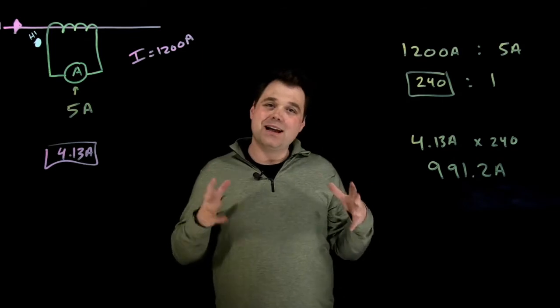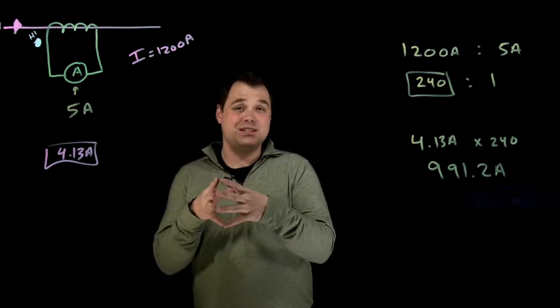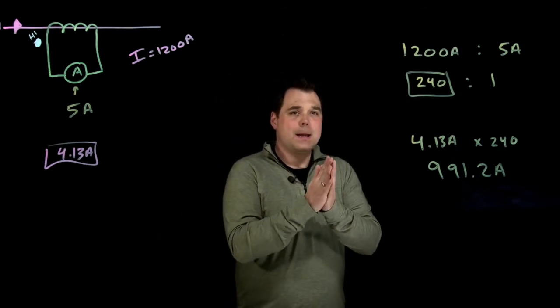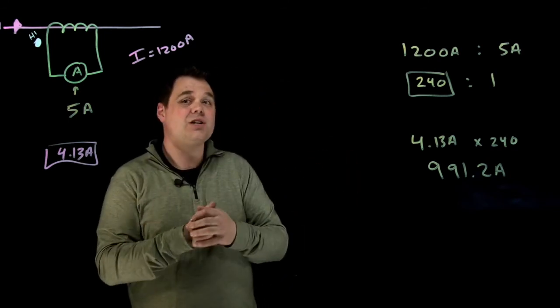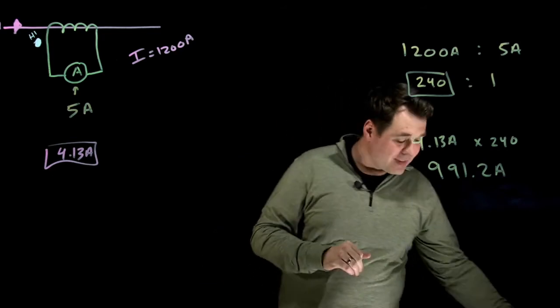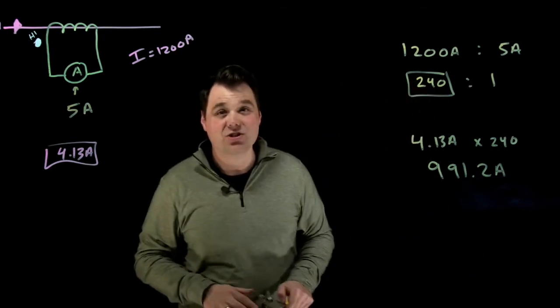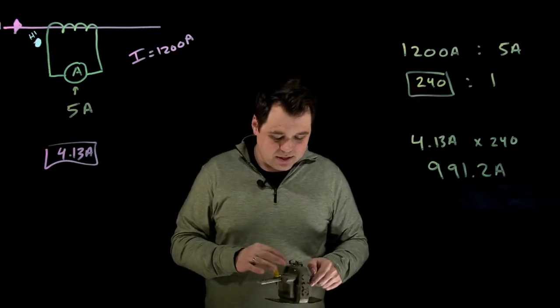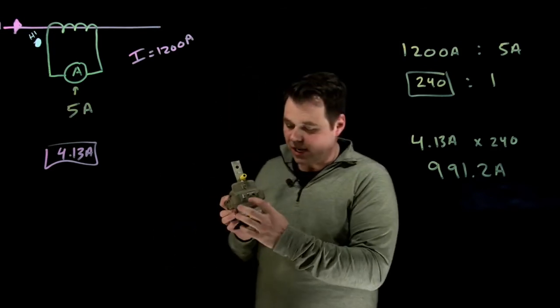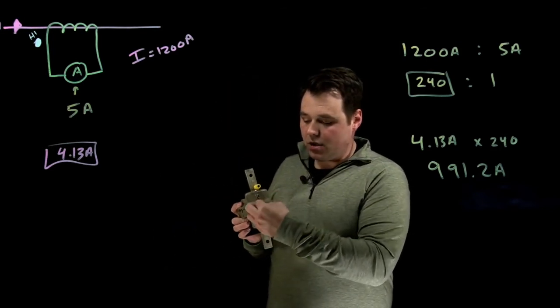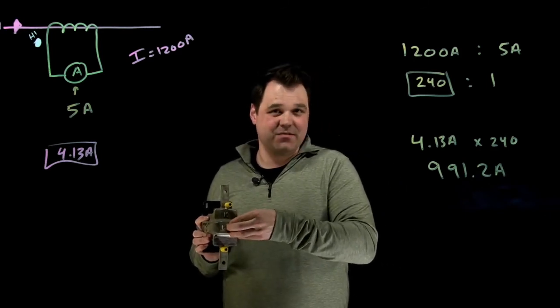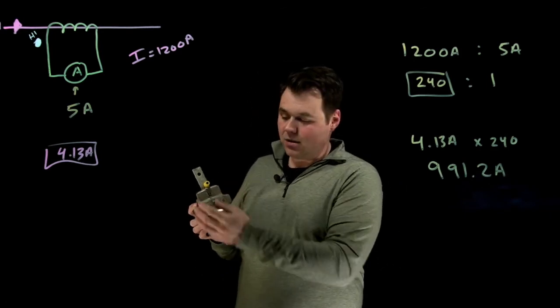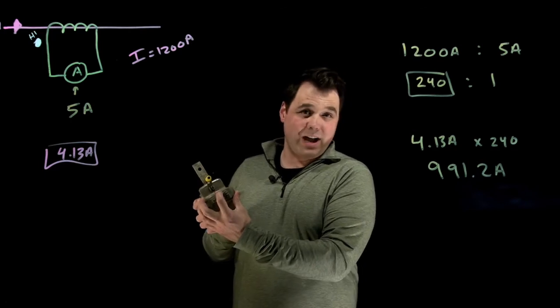But there's something that matters safety-wise with these current transformers. Because of the nature of the transformer, the super high voltage winding, it actually can never be open circuited. So what that means is on CTs, what you'll see is you'll actually see something that you can, if you have to uninstall it live or disconnect it from the circuit in any way, you can actually short it out.